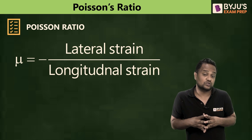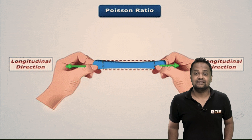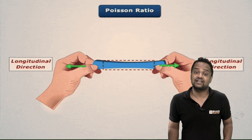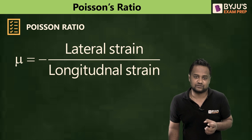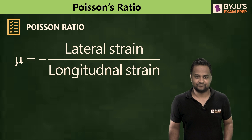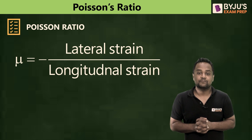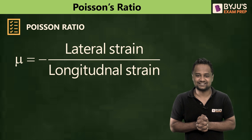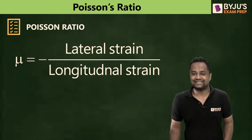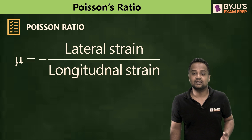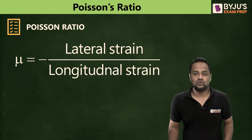Why is the minus sign in the formula? For most materials, if we elongate the body then the tensile strain is positive, and in the other direction it is compressed — that is negative. So one value will be positive and one will be negative. The additional minus sign makes the ratio positive in most cases. So mu, or Poisson's ratio, equals minus lateral strain divided by longitudinal strain, giving a positive value for most materials.